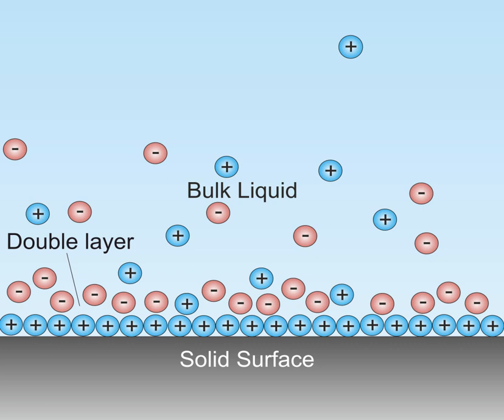The inner Helmholtz plane passes through the centers of the specifically adsorbed ions. The outer Helmholtz plane passes through the centers of solvated ions at the distance of their closest approach to the electrode. Finally the diffuse layer is the region beyond the OHP.